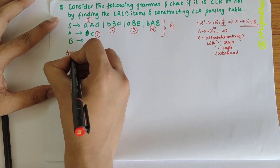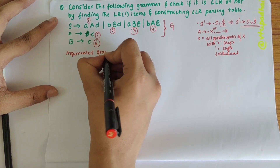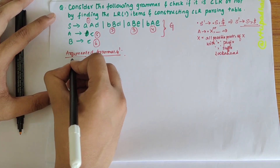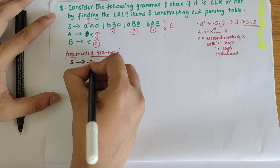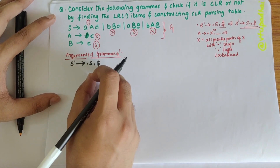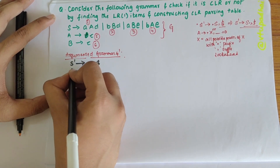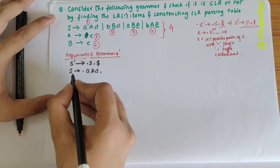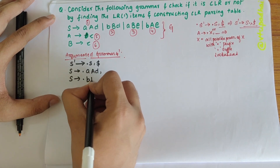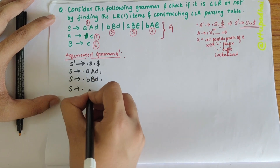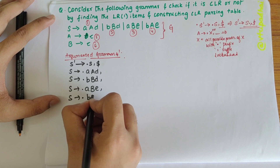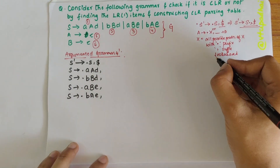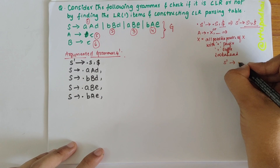So the augmented grammar G' starts with S' → •S, $. Since after the dot I have S being a non-terminal, I should write all possible productions: S → •AAd, S → •BBd, S → •ABe, and S → •BAe. In order to fill the lookahead, I'll use the equation: S' → •S, $ and compare it with A → α•Bβ, a to find FIRST(β) and a.